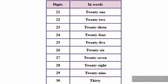24: T-W-E-N-T-Y F-O-U-R — 24. 25: T-W-E-N-T-Y F-I-V-E — 25. 26: T-W-E-N-T-Y S-I-X — 26. 27: T-W-E-N-T-Y S-E-V-E-N — 27.